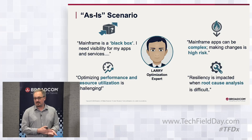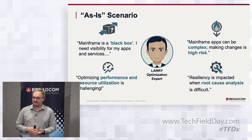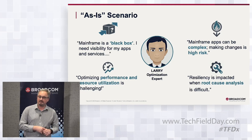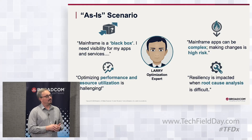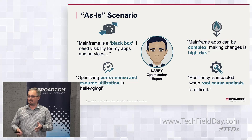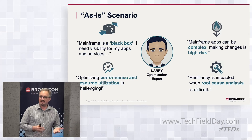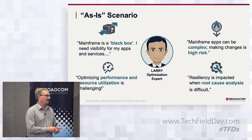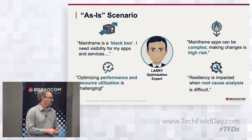As we look at capabilities, we always try to link things back to personas and understand what their job is, what the problems are, and really how to make their lives simpler. This particular capability is focused on a new persona called Larry. He is an optimization expert. His job is to help optimize both applications and the underlying performance of the mainframe. We've spent a lot of time talking to our strategic customers, understanding where their pain points are, and Larry is one of these new personas that seems to be popping up with our customers.